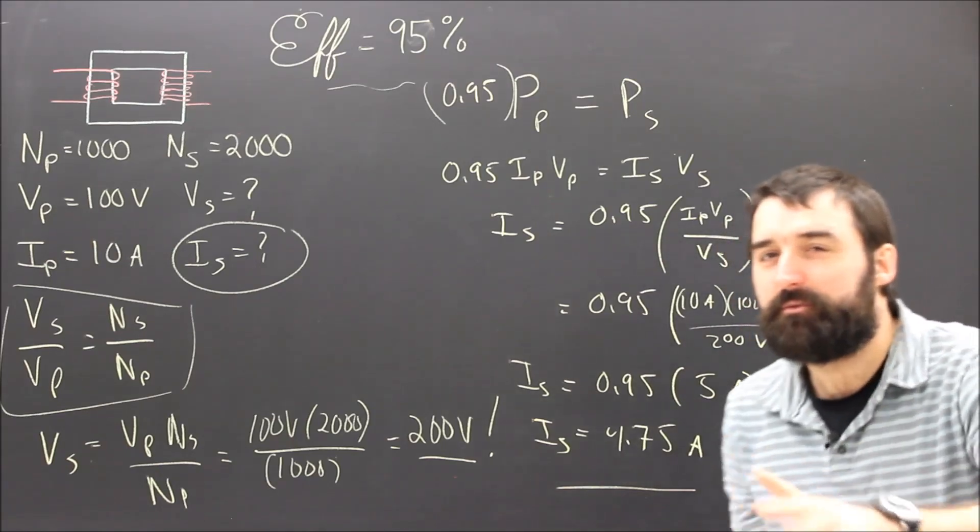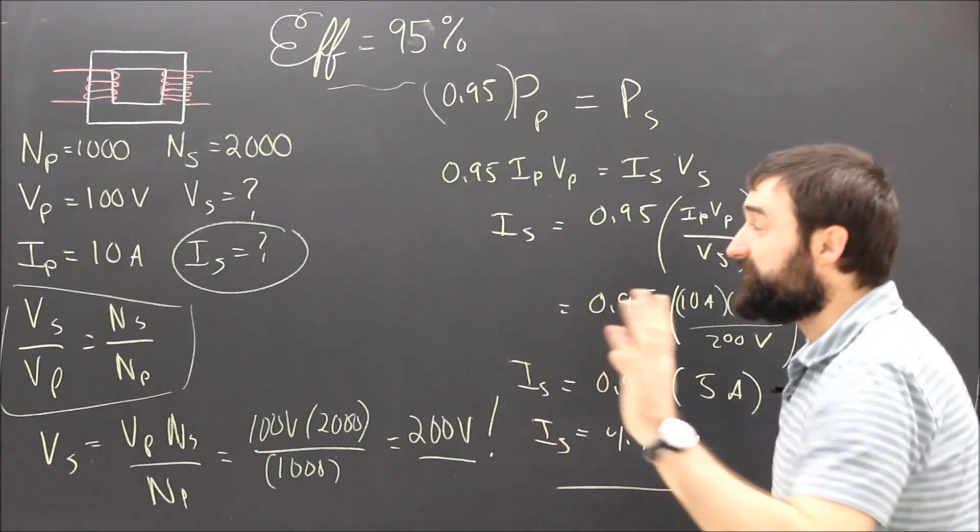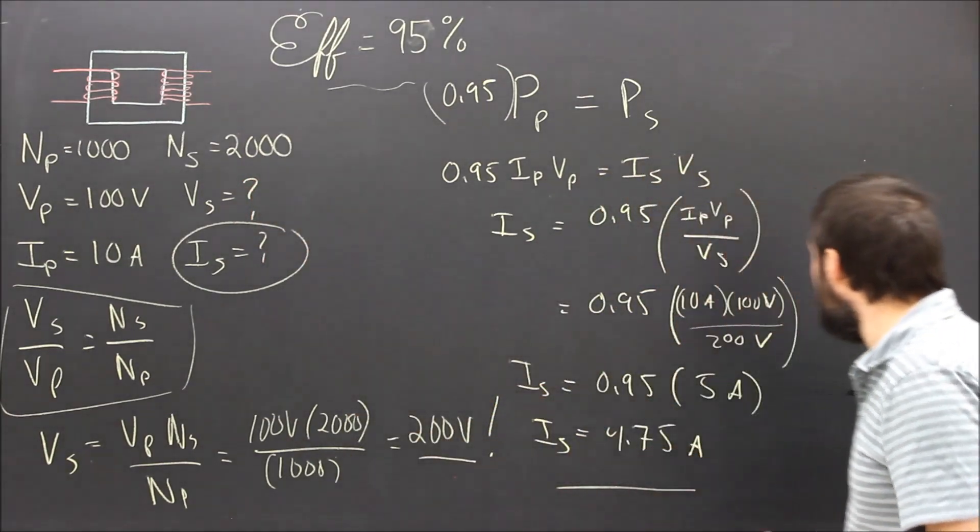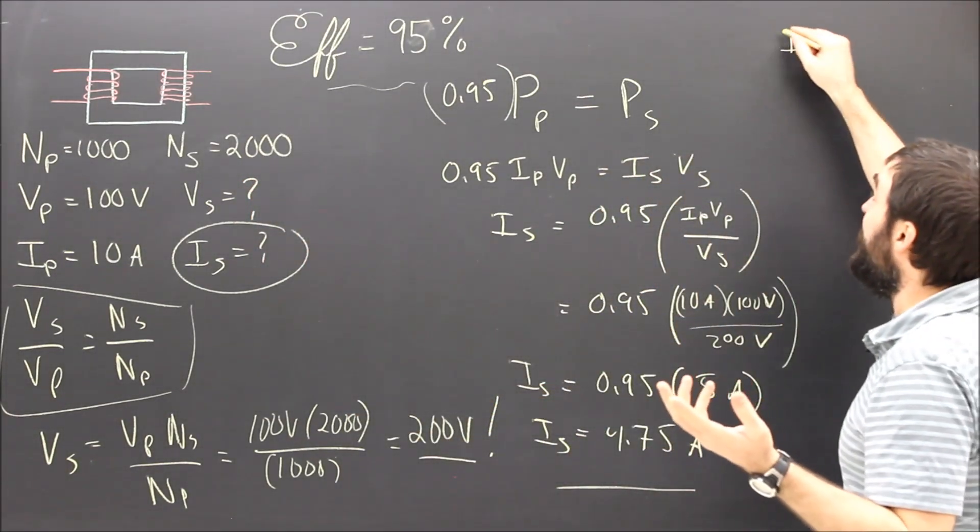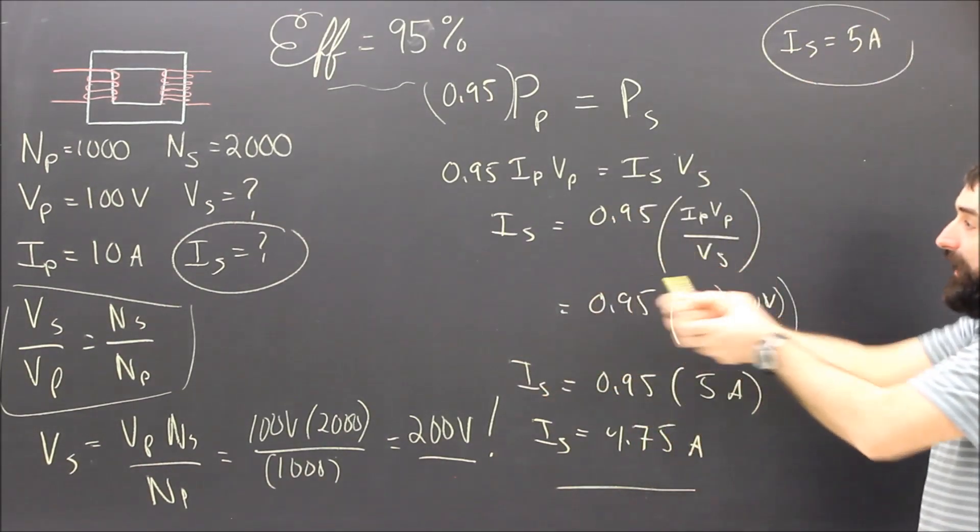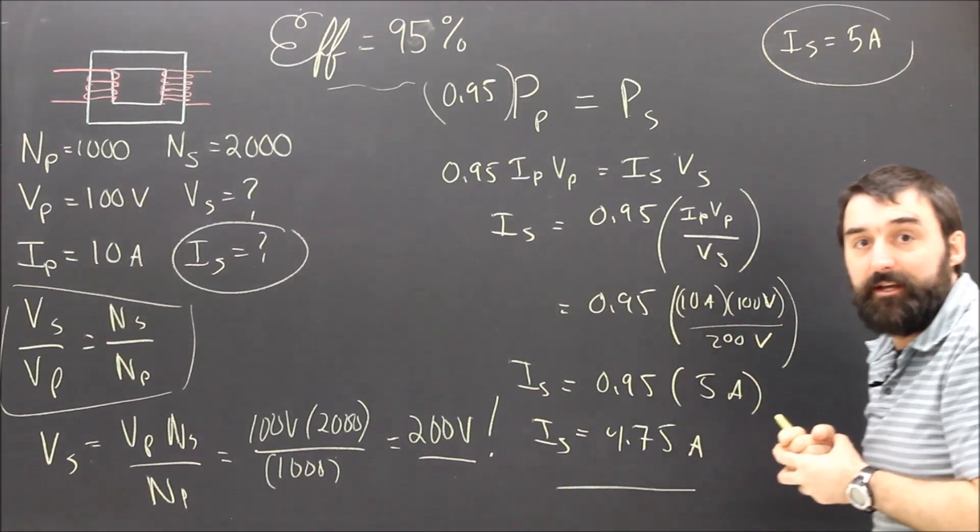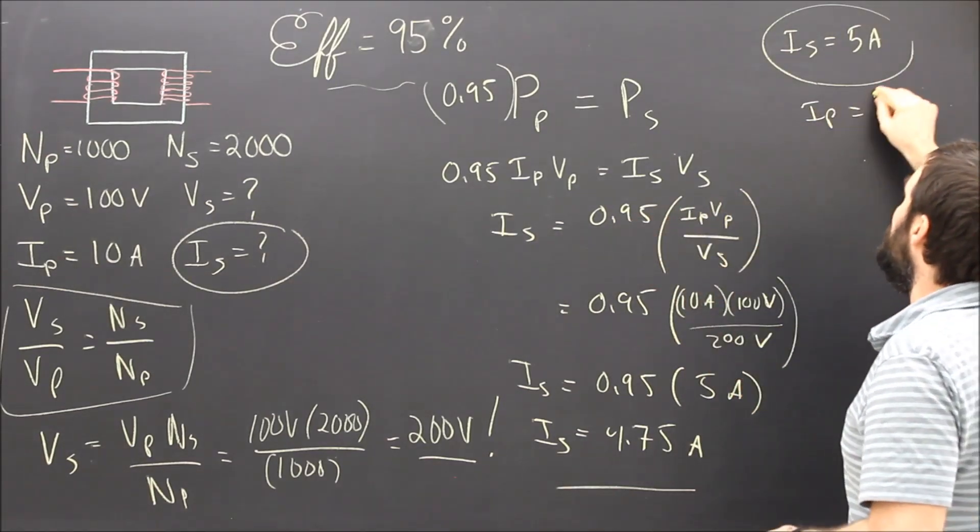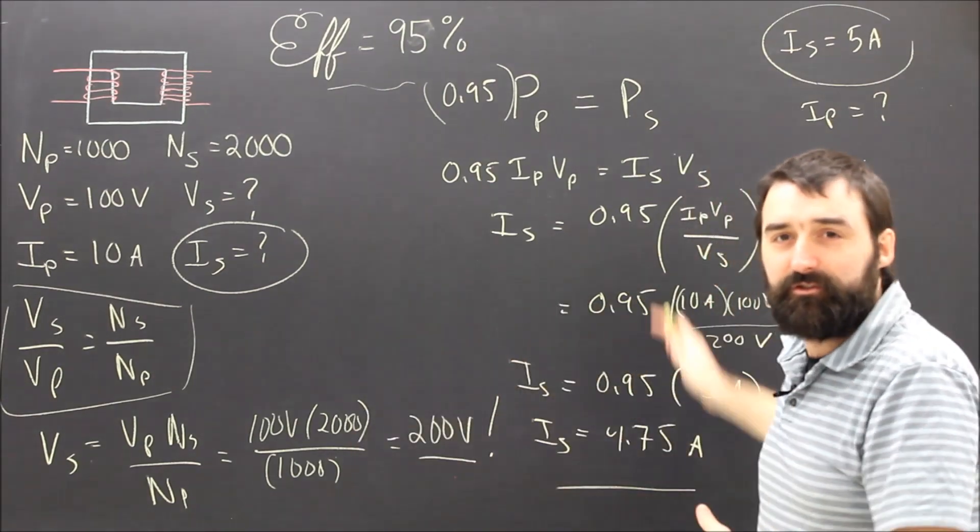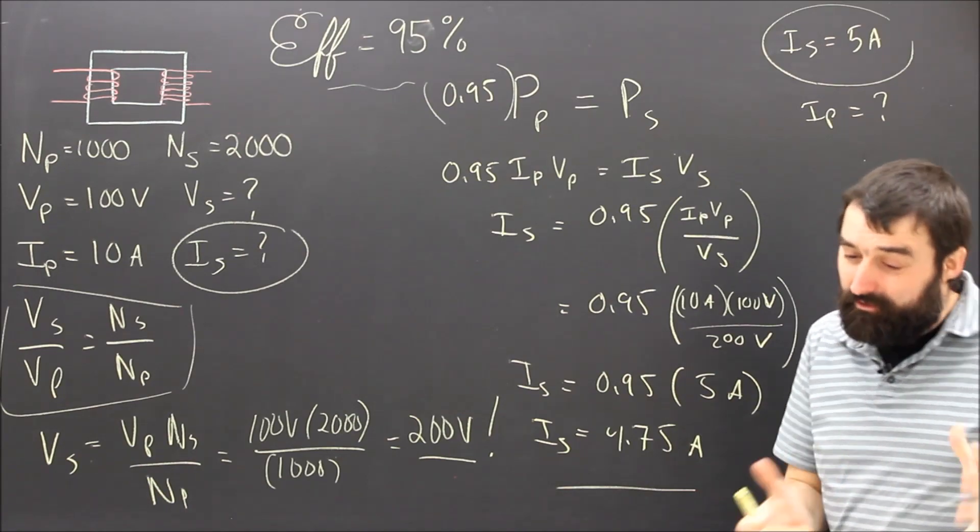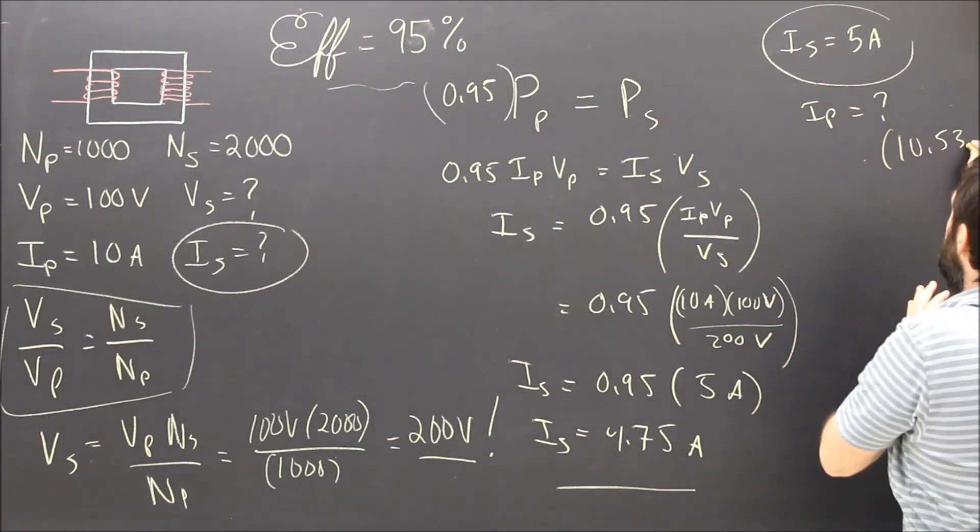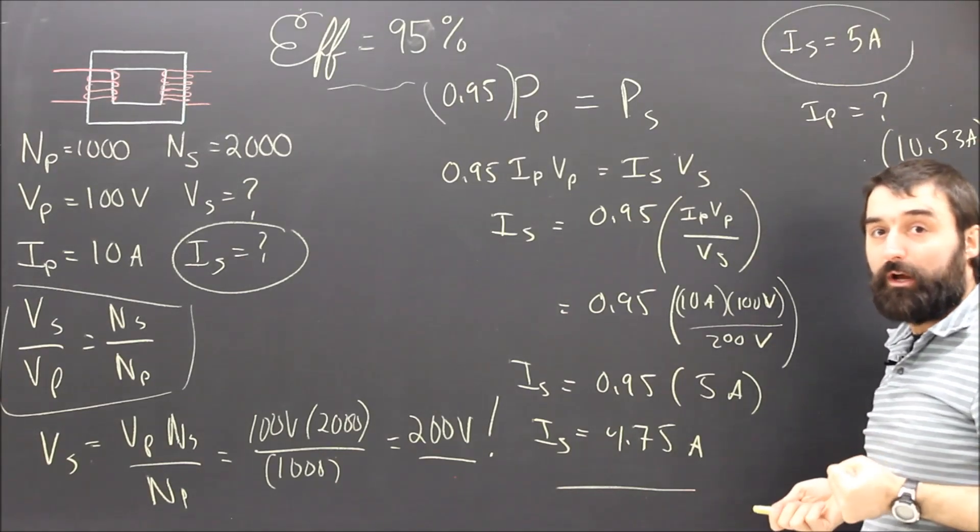But this really isn't the way it usually works in the real world either, because normally we want to have a certain amount of power coming out of our transformer. So maybe a better question would have been to say, hey, if I need IS to be 5 amps, if I need 1,000 watts coming out of this thing, then how much current has to go into it? And that would be a really good question for you to sit down right now and try. If you've understood our video here, then it should only take you a minute or a couple of seconds, I hope, really, to come up with the answer, which is 10.53 amps. But try it.